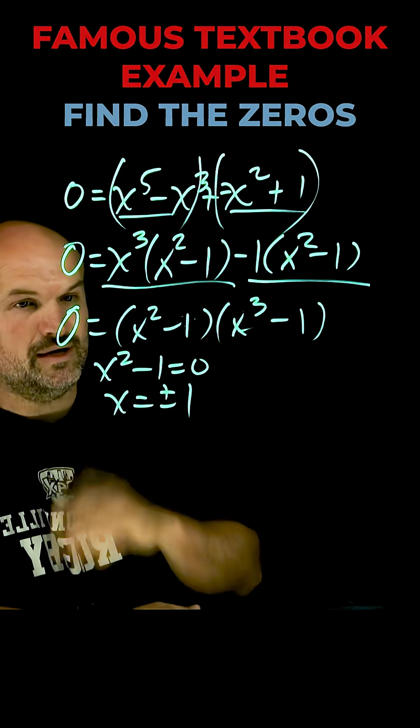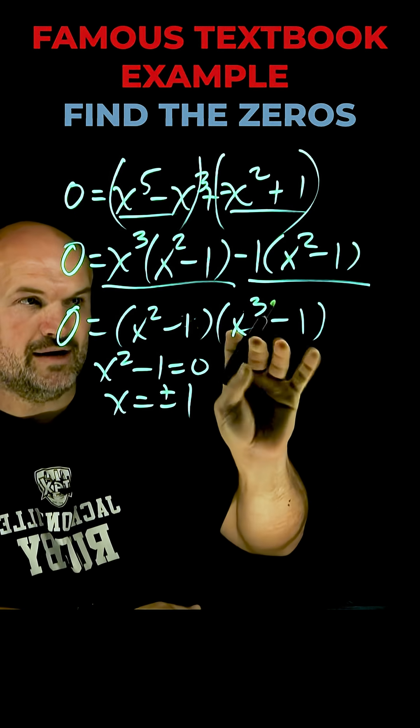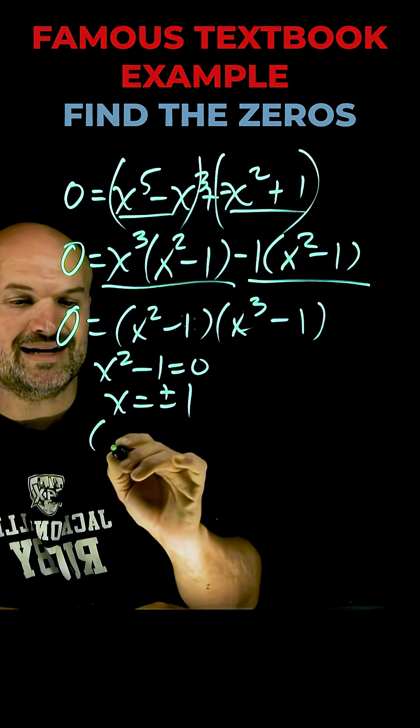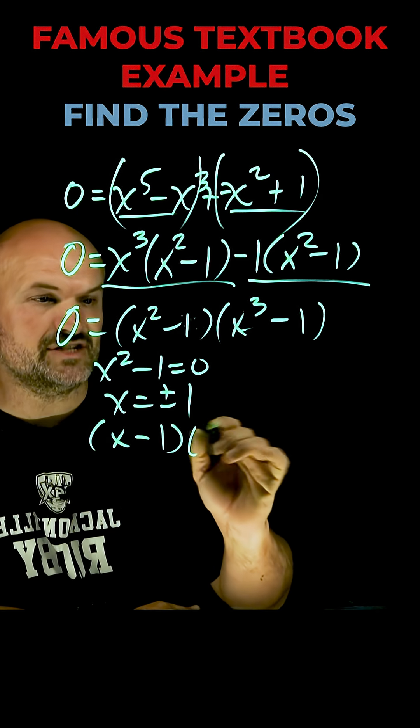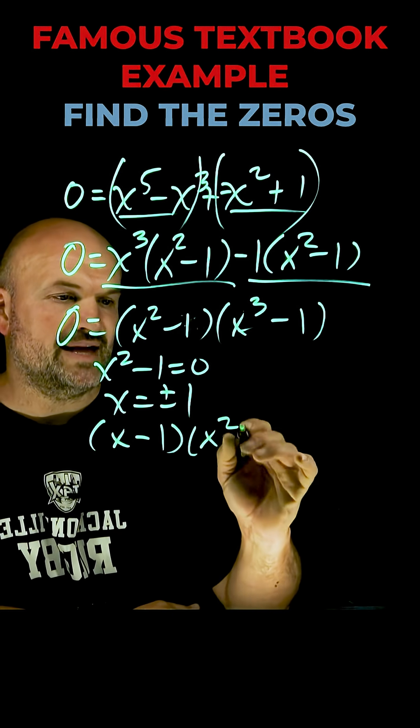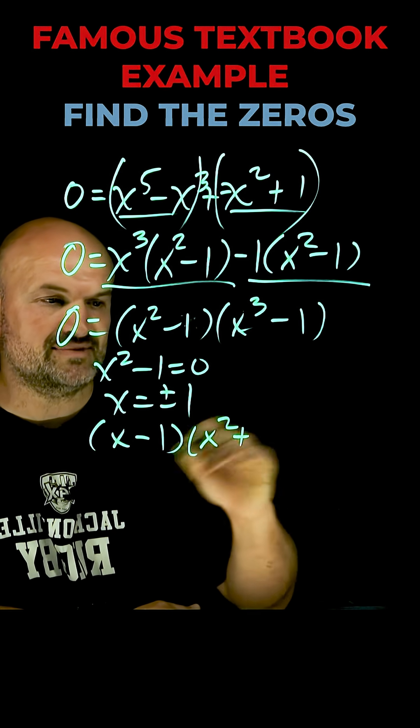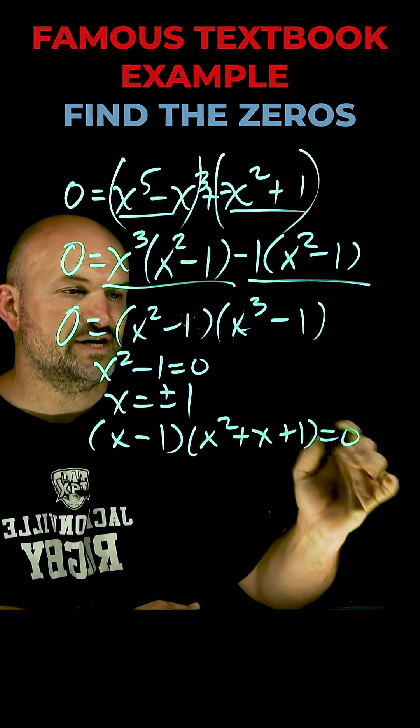Since this is a polynomial to the fifth degree, we know there's going to be five solutions. So how do we solve an x cubed minus one? Well, we recognize that that is a difference of two cubes. So the factored form of that is going to be an x minus one times x squared plus x plus one equals zero.